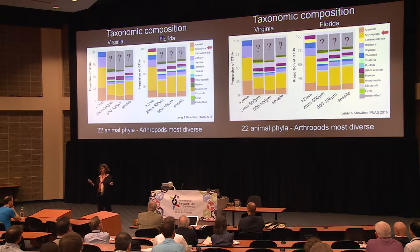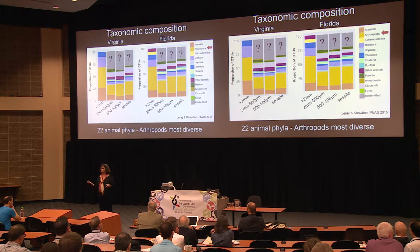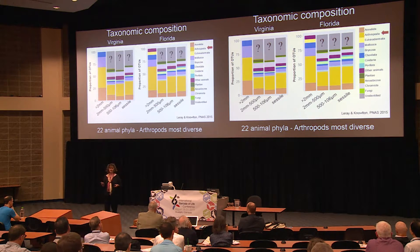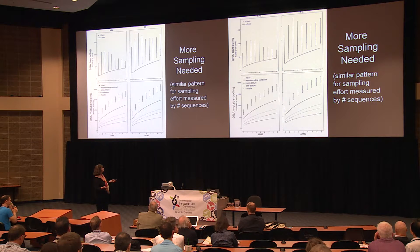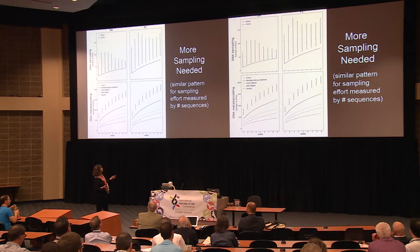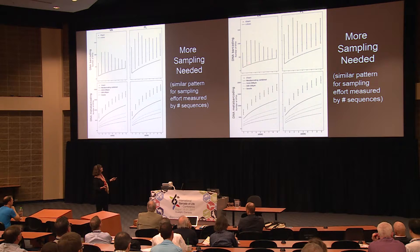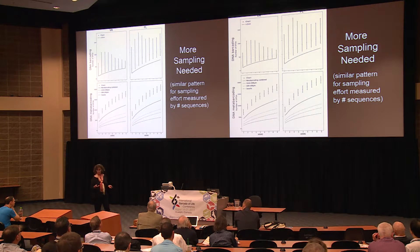In terms of taxonomic composition: 22 animal phyla, with arthropods — as in a tropical forest — being the most diverse. More sampling is needed despite two years of work, and most of the curves are continuing to increase. The only exception is the larger animals greater than 2 millimeters analyzed with conventional barcoding in Virginia, the lower diversity site, where that curve is leveling off. But the rest of them are still going up.